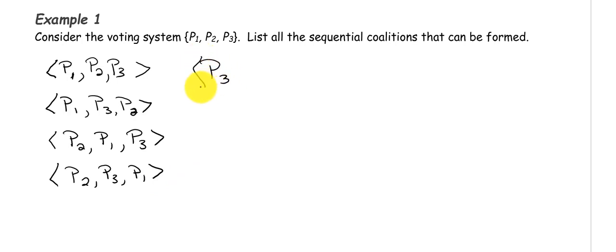Now we have all of the coalitions with player one first, all of the coalitions with player two first. So now we'll go on to player three being first. We could have player three, player one, player two. And then we could have player three, and then switch players one and two around. So player two, player one. That is how you would make this list.